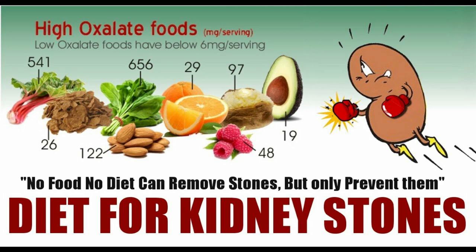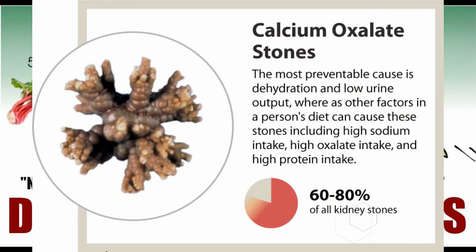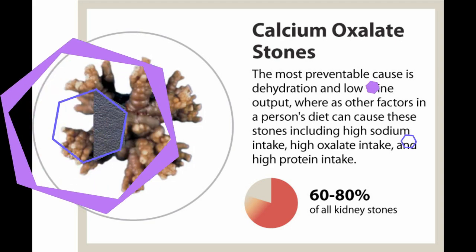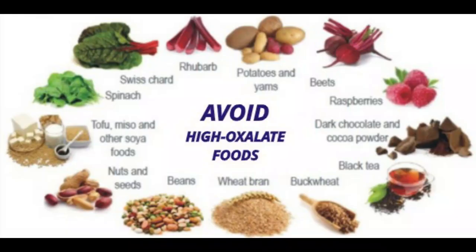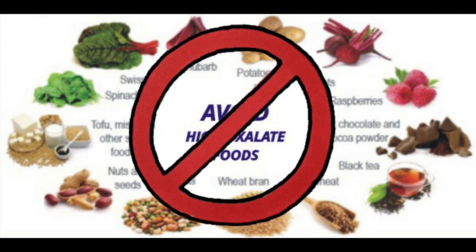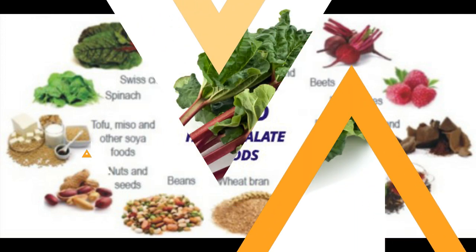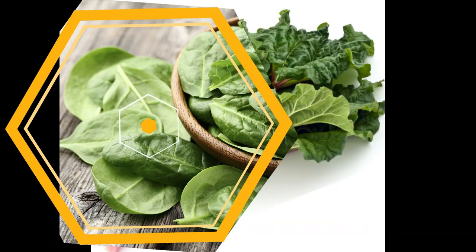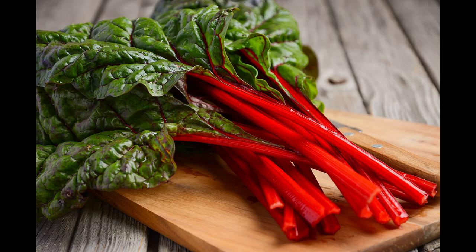Eat fewer oxalate-rich foods. Some kidney stones are made of oxalate, a natural compound found in foods that binds with calcium in the urine to form kidney stones. Limiting oxalate-rich foods may help prevent the stones. These include leafy vegetables such as rhubarb, spinach, and Swiss chard.